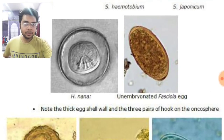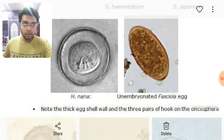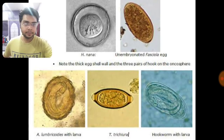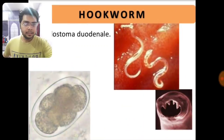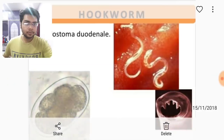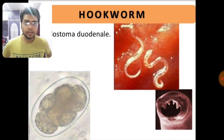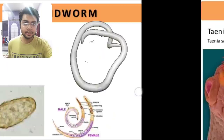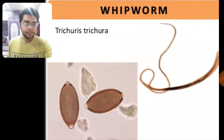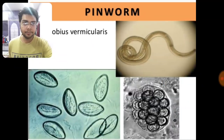H. Nana is here — you can see the thick egg shell with three pairs of hooks on the oncospheres. Trichuris trichiura has nothing more important in this slide. These are just revision slides for you. This is Ancylostoma duodenale with segmented eggs containing 8 blastomeres — hookworm. Then roundworm, that is Ascaris lumbricoides; tapeworm, Taenia solium; whipworm or Trichuris trichiura; pinworm or Enterobius vermicularis.